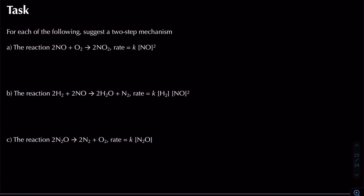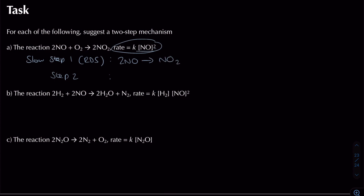Now for the practice problems: suggest a two-step mechanism for the following reactions. For all of these, step one is the slow step — the rate determining step — and step two is the fast step. Looking at the rate equation with two lots of NO, those two NO molecules react together in step one. I'll form NO₂ as one product, and what's left over is N as an intermediate. That N then reacts with oxygen in step two to form NO₂.